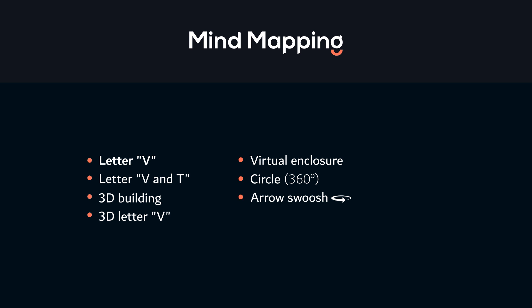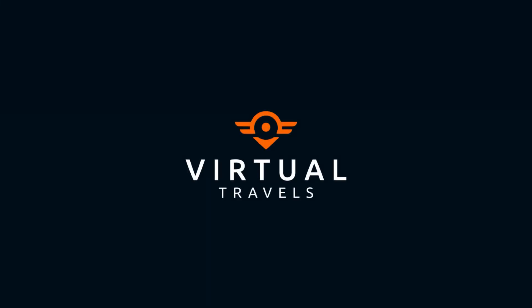To provide a friendly visual, we can use a minimalistic version of a person experiencing the virtual tour. A location pin can also be used to specify the location. Since the brand name suggests virtual travels, to emphasize travel we can use minimalistic elements like wings or tires — but wings are more suitable as they provide a smoother experience. To design our logo, I decided to use the virtual enclosure of a circle, a person, a location pin, and wings.